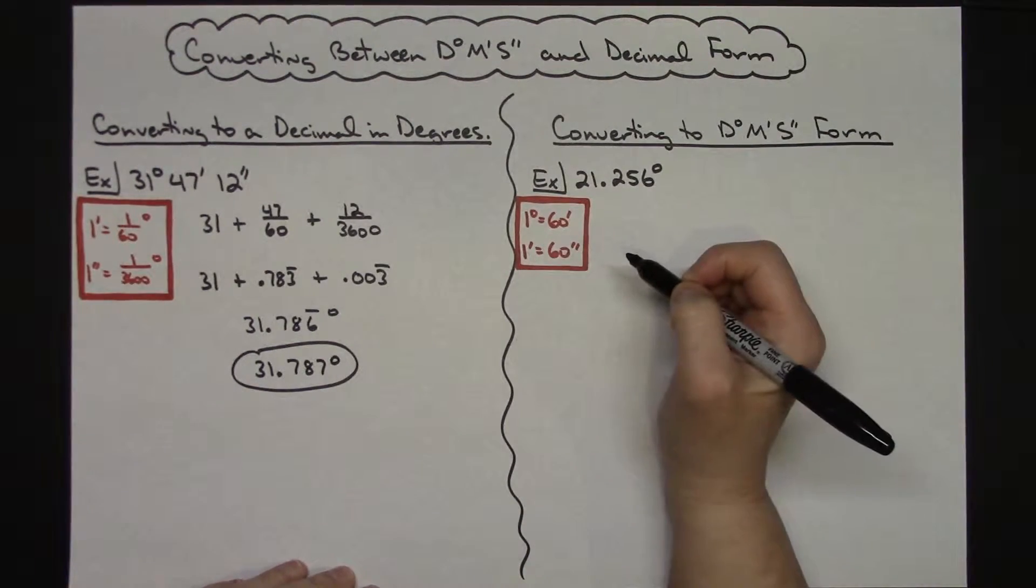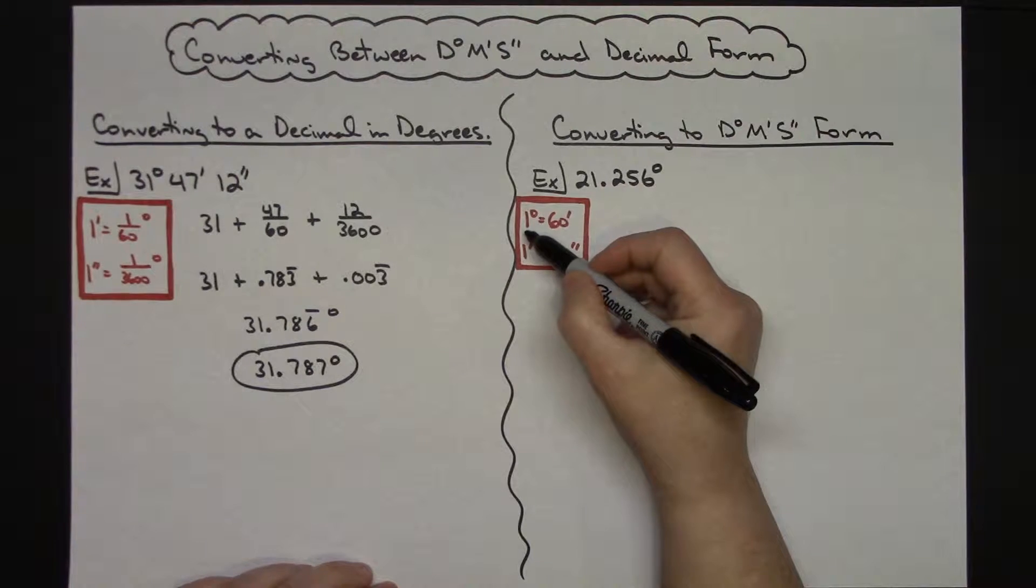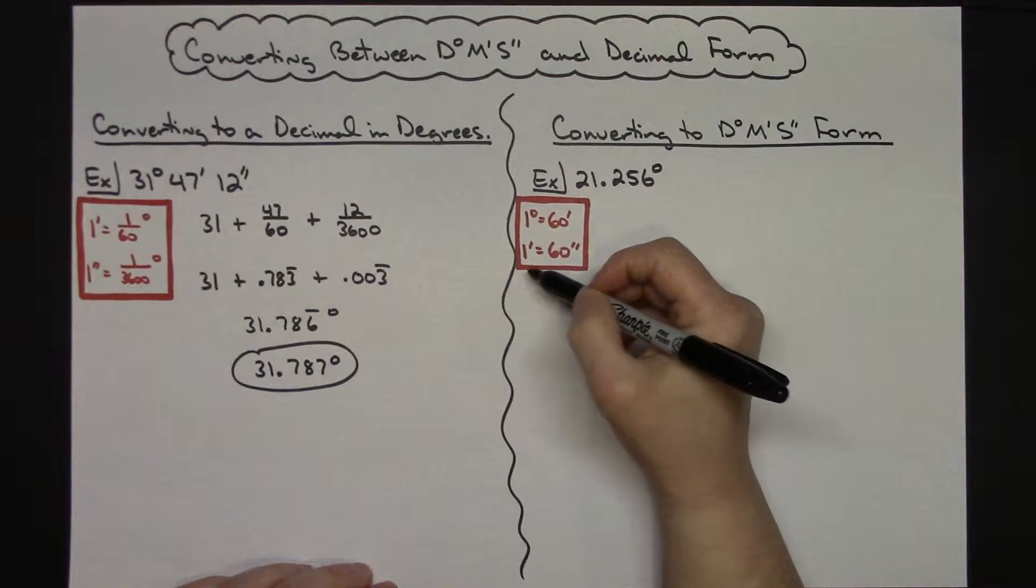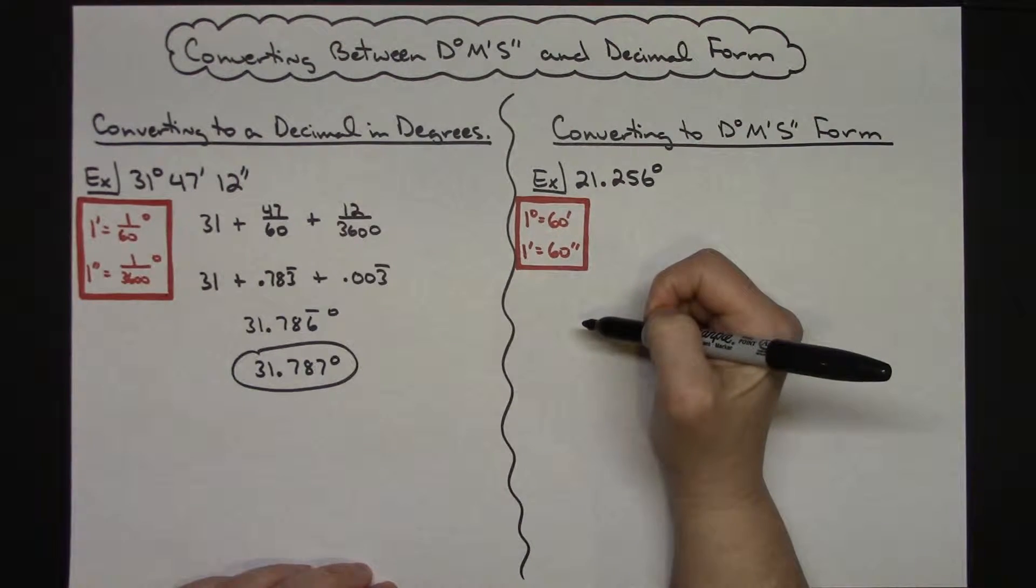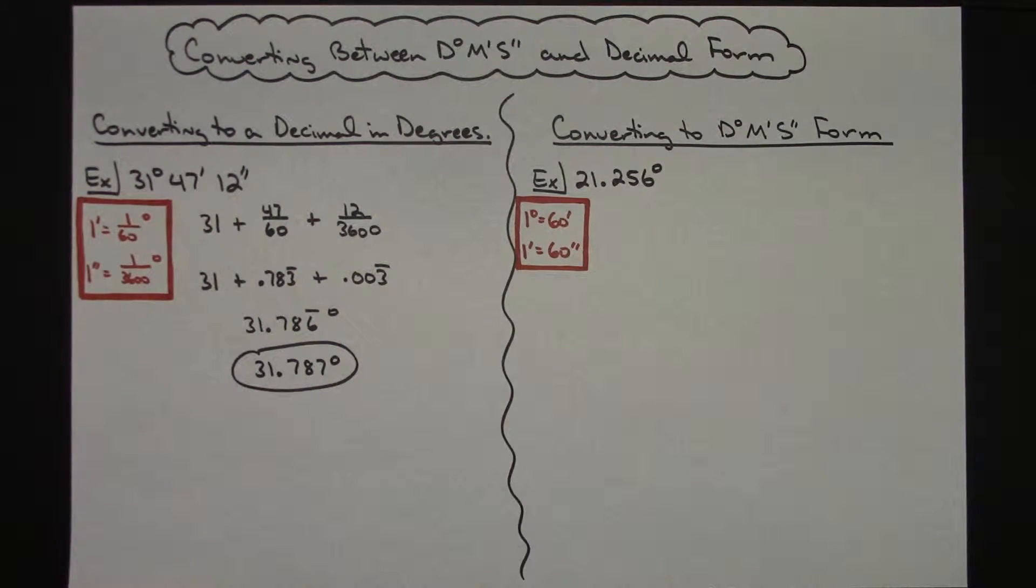So again looking at a couple conversion factors here that's going to help us: one degree is equal to 60 minutes, one minute is equal to 60 seconds. So those are going to be our two factors that we're going to use here.